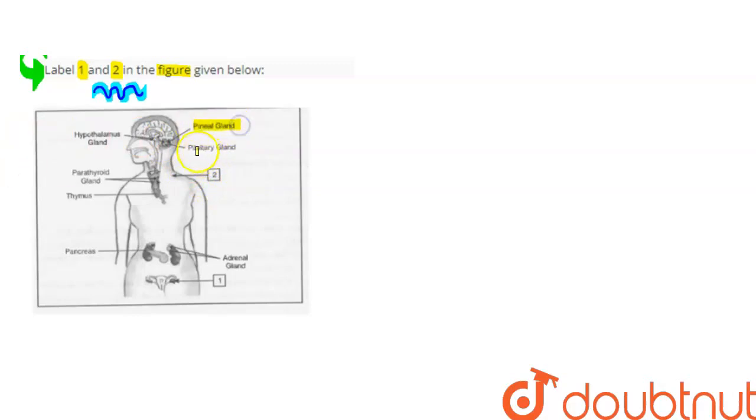This is the pineal gland, then pituitary gland, then adrenal gland, pancreas, thymus, parathyroid gland, and hypothalamus gland.